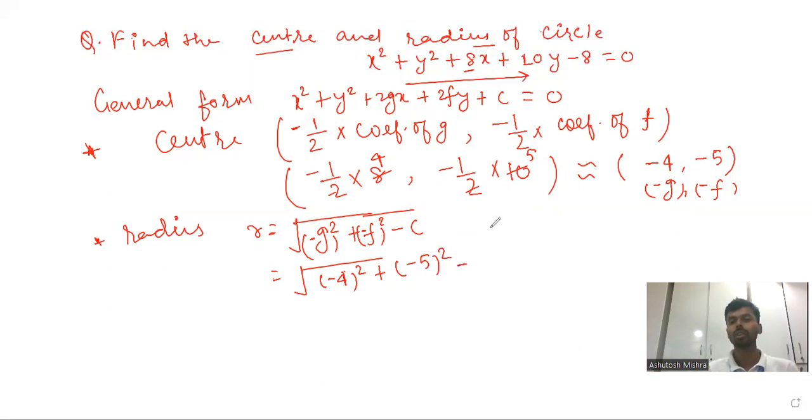What is the value of c? The coefficient c value given here. In the standard form we have x² + y² + 2gx + 2fy + c. When you compare, the c value is minus 8. Here c equals minus 8, and minus minus 8 becomes plus 8.